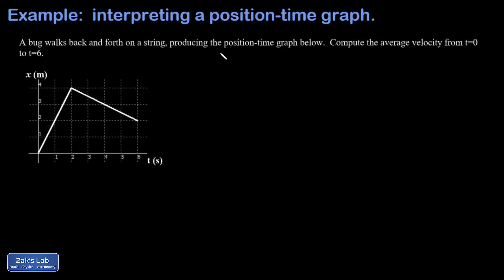In this video, we're presented with a position-time graph for a bug walking back and forth on a string, and we're asked to compute the average velocity on the time interval 0 to 6.